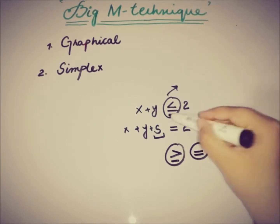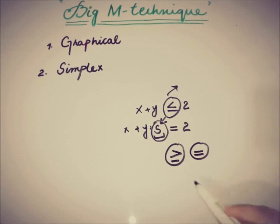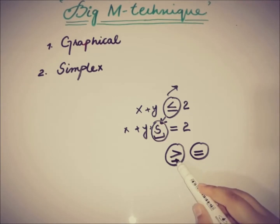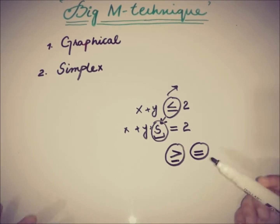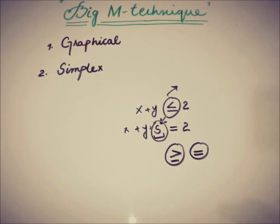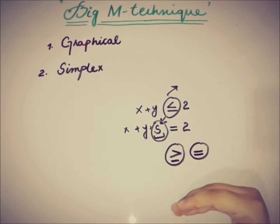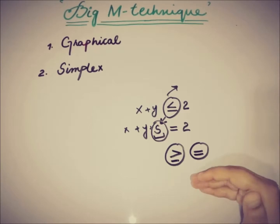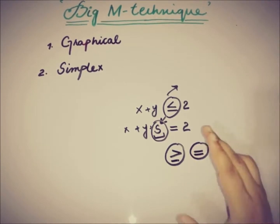The less than or equal to case was handled by adding a slack variable. But what if we have a constraint with a greater than or equal to sign? Here we not only have to subtract the surplus variable — subtracting the surplus is not the only choice we have. We also need to add something else.